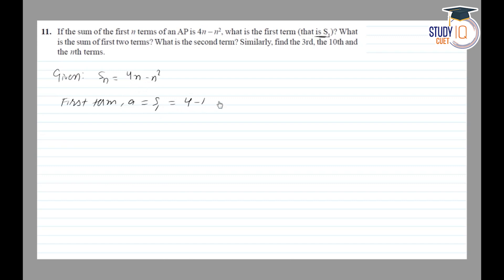Now what is the sum of first two terms? He is asking sum of first two terms, that is s2. So putting 2 in place of n, 4 into 2 minus 2 square, so this gives 8 minus 4, which is 4.